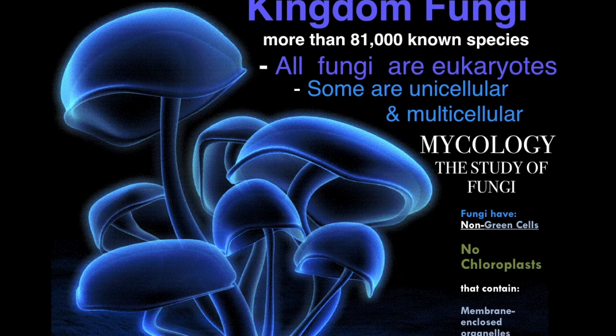Now we're going to talk about kingdom fungi. There are more than 81,000 known species of fungi. All fungi are eukaryotic cells, meaning they have a nucleus. Some are unicellular such as yeast, but the majority of fungi are multicellular.